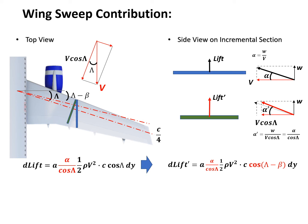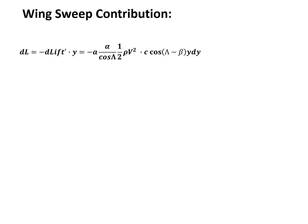We can then calculate the rolling moment. The incremental rolling moment dL equals minus dL-prime times y — again a negative sign by the right-hand rule. We plug in dL-prime to get the expression. We've now derived the rolling moment contribution from that incremental section, and the following steps are somewhat mathematical.